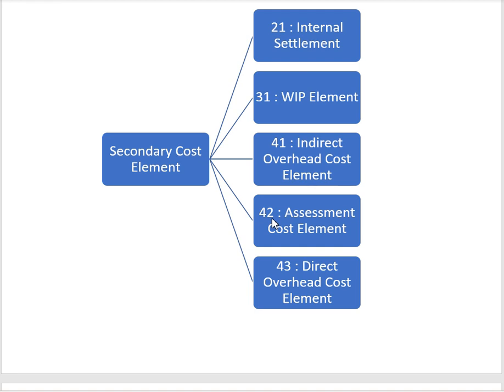Category 42 is used when assessing cost from cost center to another cost center or from cost center to COPA, using assessment cost elements and running assessment cycles periodically. When creating cost elements, we must assign the appropriate cost element category during creation. That's all for this video — thank you for watching.